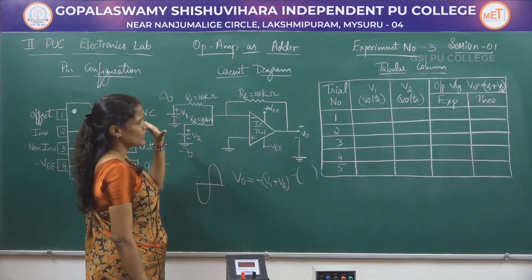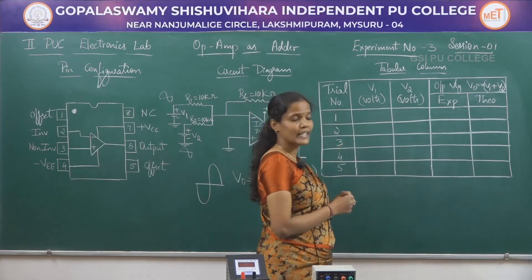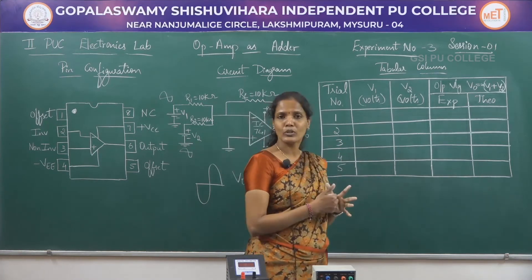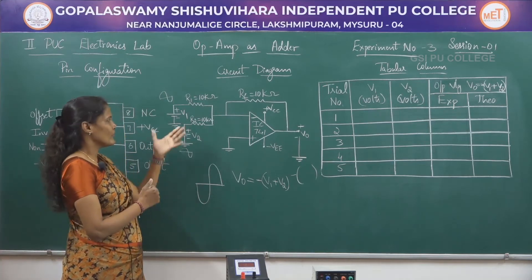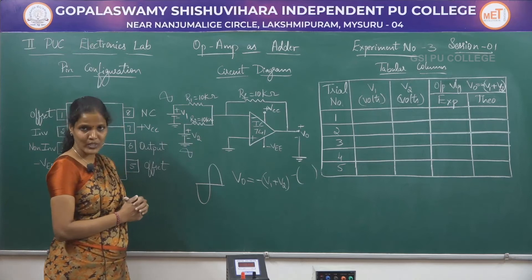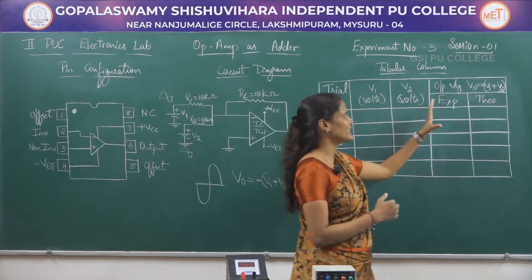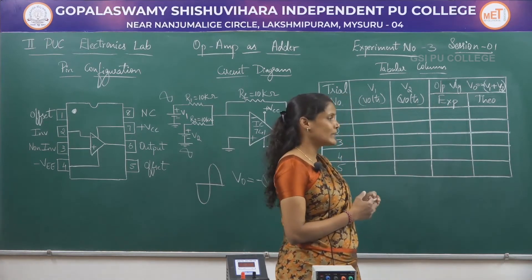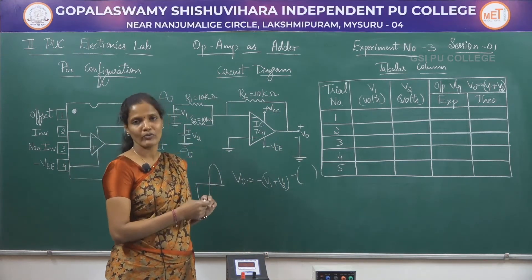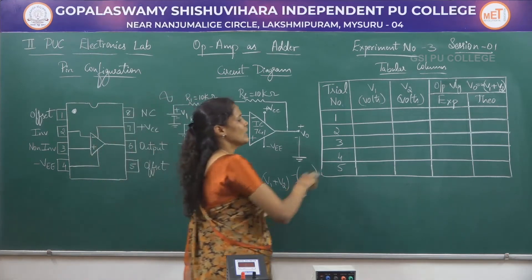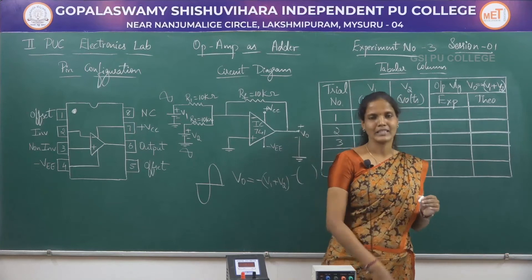This is the circuit diagram for the adder circuit, and this is the tabular column where V1 and V2 are the input voltages. We are going to vary the input voltages in steps. Two separate RPS units will be used — one named V1 and the other V2. We will vary the voltages and record both experimental and theoretical values. The experimental value is the voltage reading from the voltmeter, and the theoretical value is calculated using the formula for those input voltages.